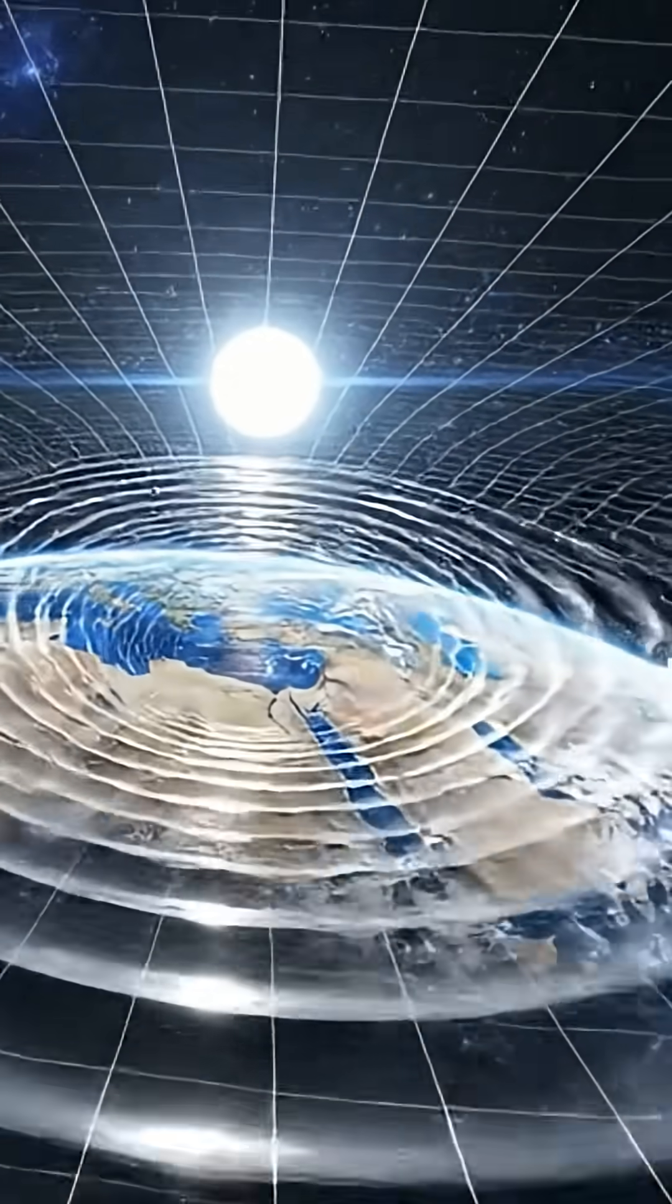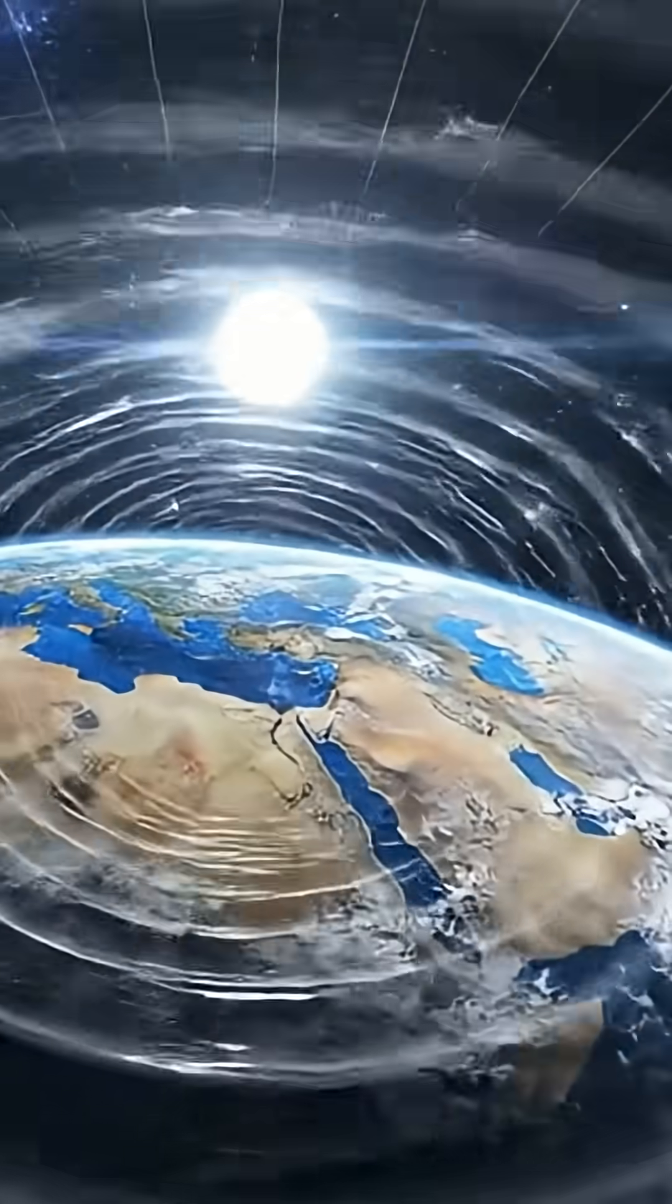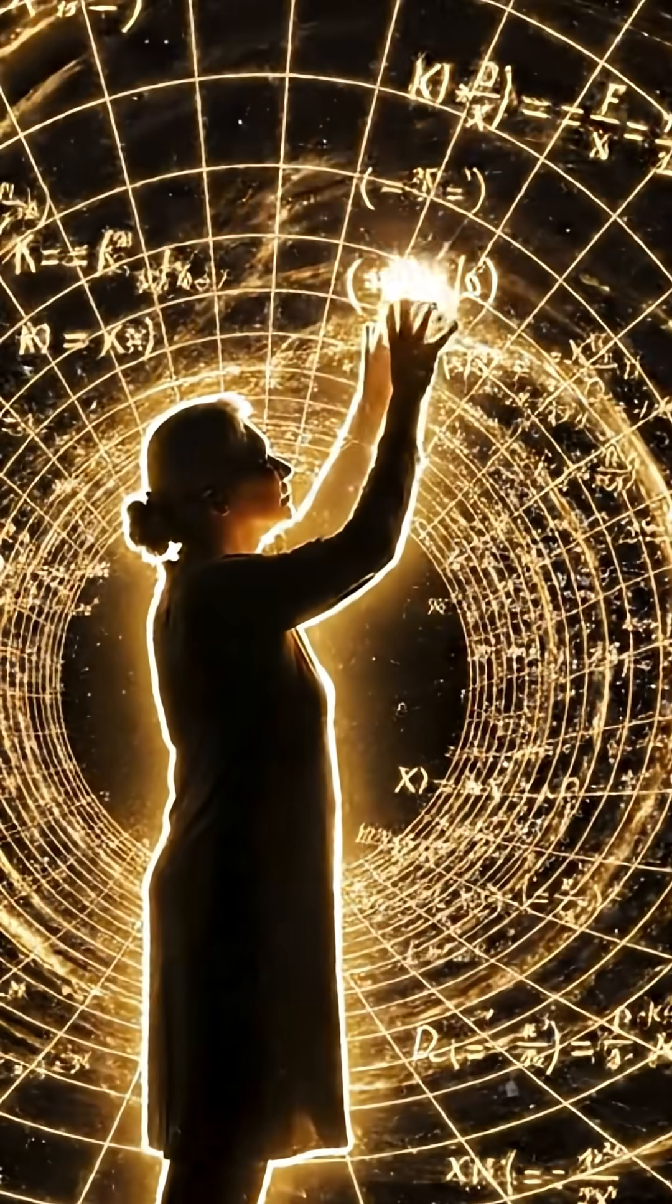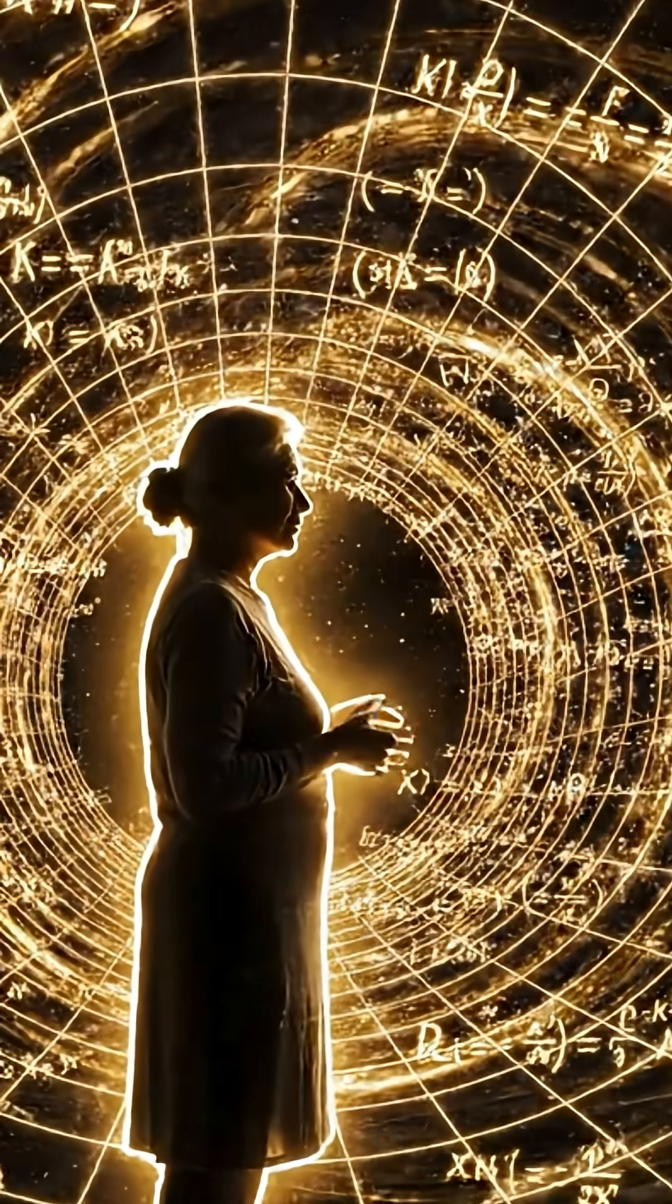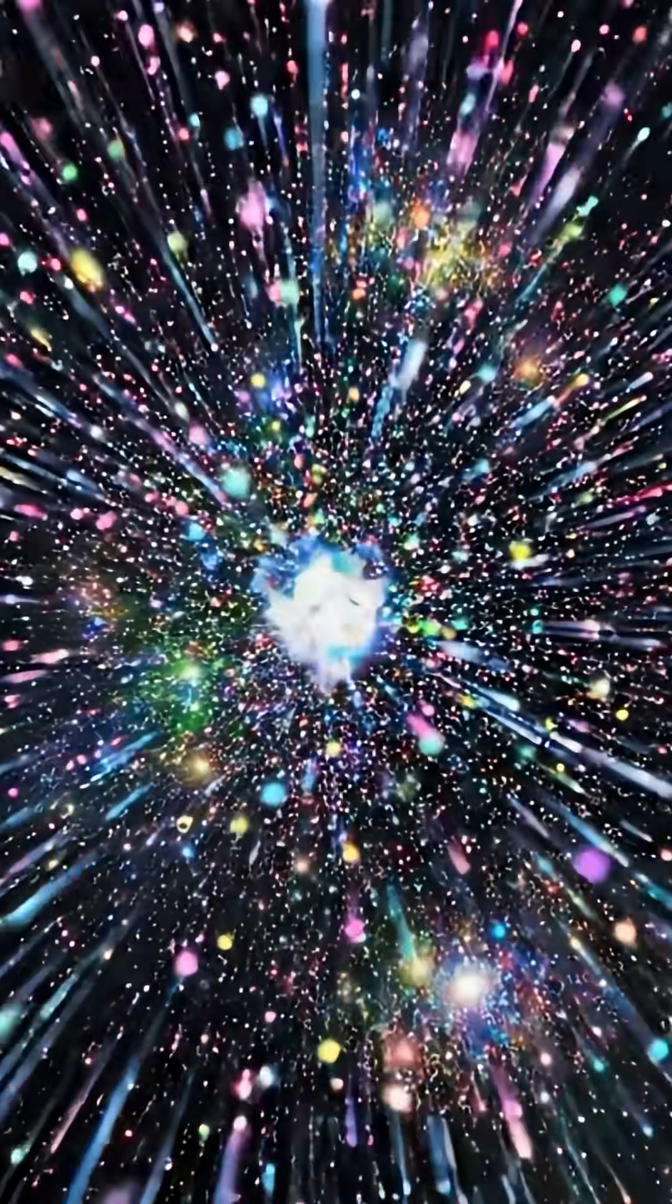Gravity is odd. It's the universe's weakest force, but yet holds everything together. Einstein declared it isn't a force at all, but warping of spacetime itself. Planets orbit not because they're being drawn, but spacetime is curved.